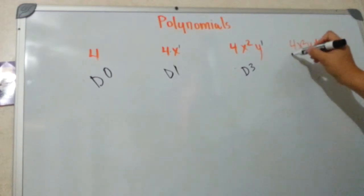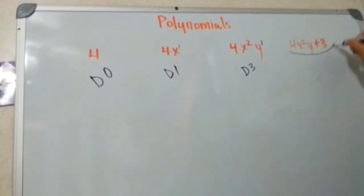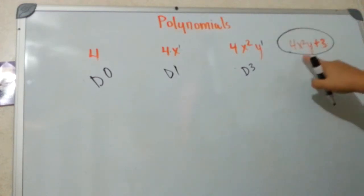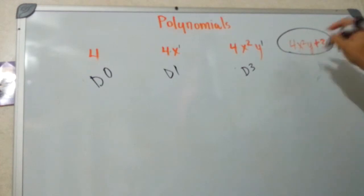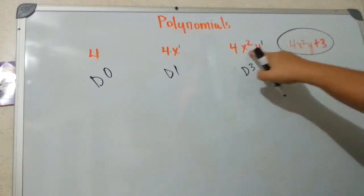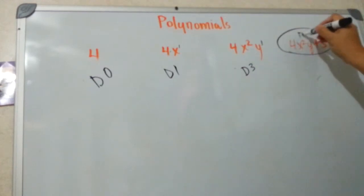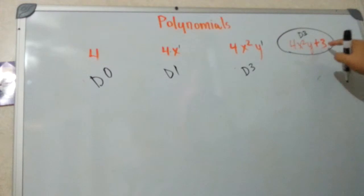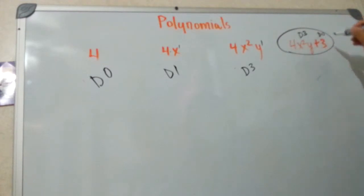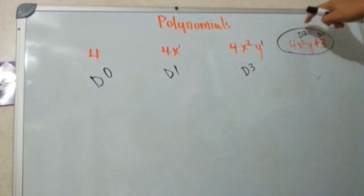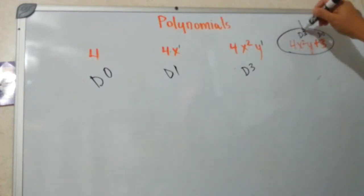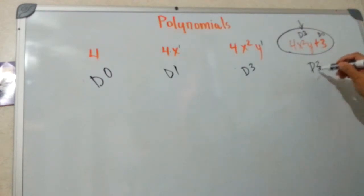To determine the degree of the polynomial, you have to look at the individual terms. This term is degree three, and this term is degree zero. So which one is higher? This one is higher. So the whole thing is a degree three polynomial.